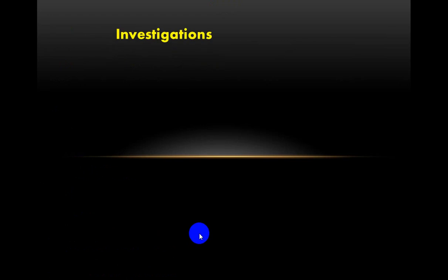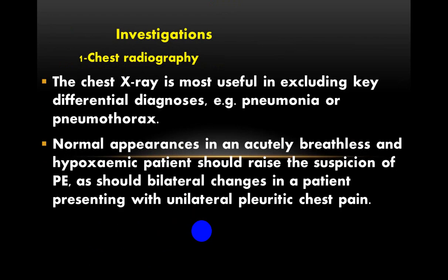Investigations for suspected pulmonary embolism begin with chest radiography. Chest X-ray is useful for excluding differential diagnoses such as pneumonia or pneumothorax. Importantly, a normal chest X-ray appearance in an acutely dyspneic and hypoxemic patient should raise suspicion of pulmonary embolism or pulmonary infarction.